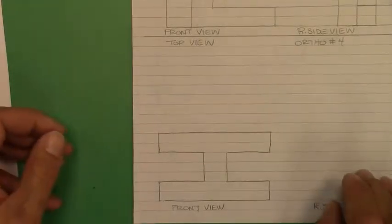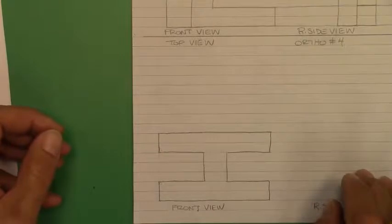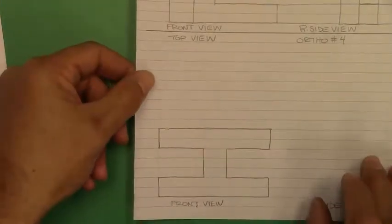Okay, we're going to have your teacher pause the video. Let's go ahead and have you now finish the missing top and right side view for number four.